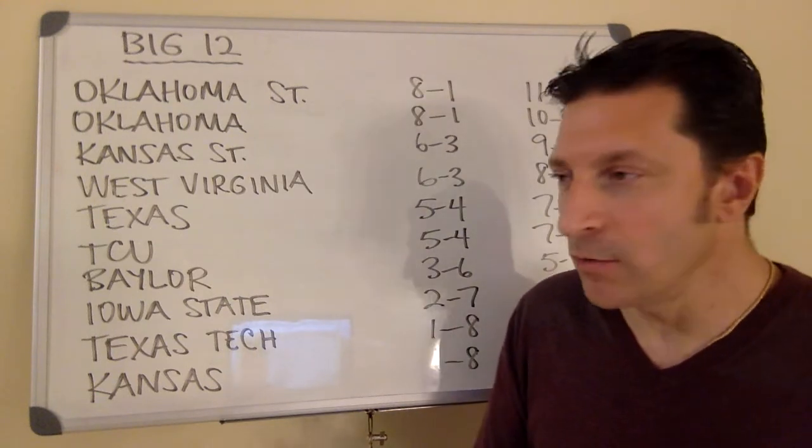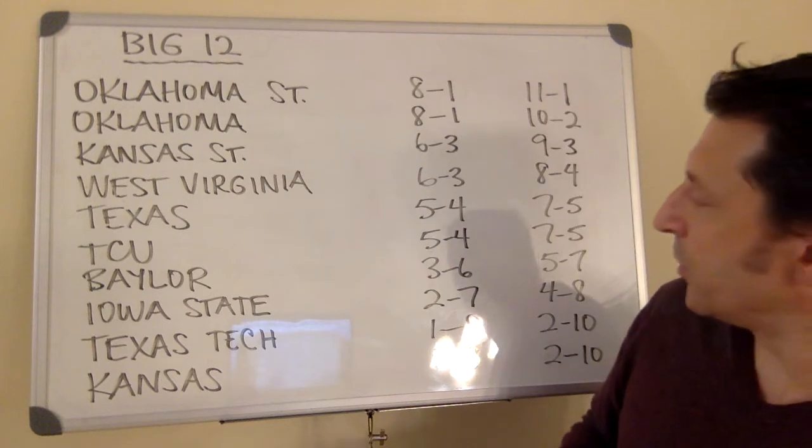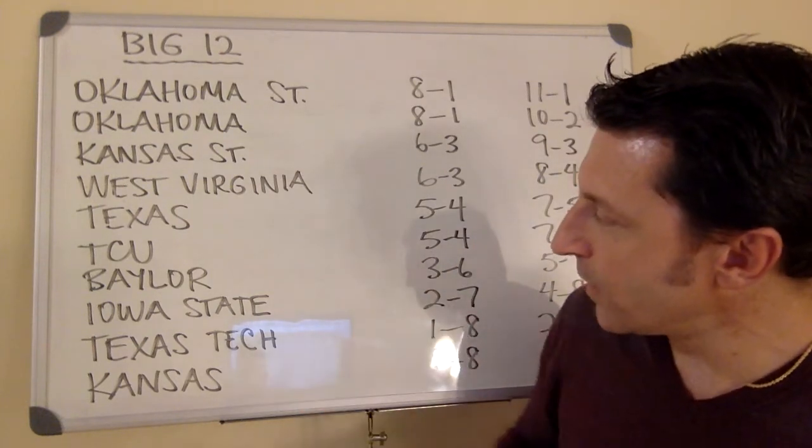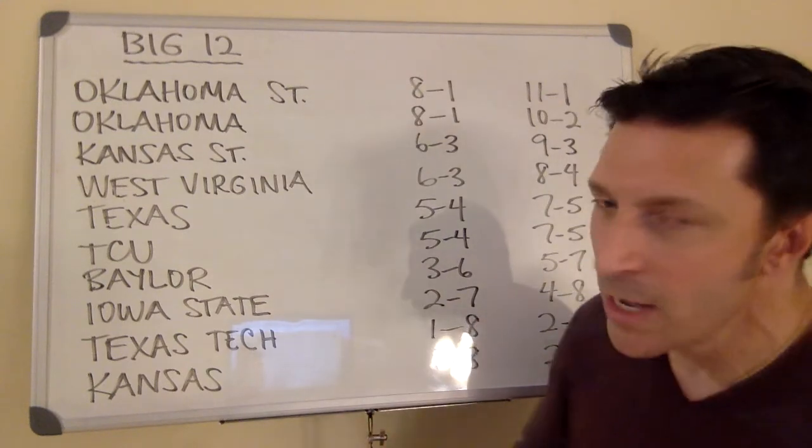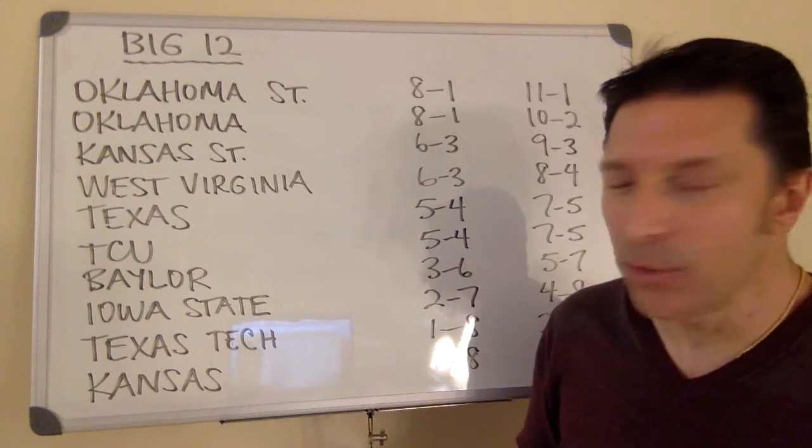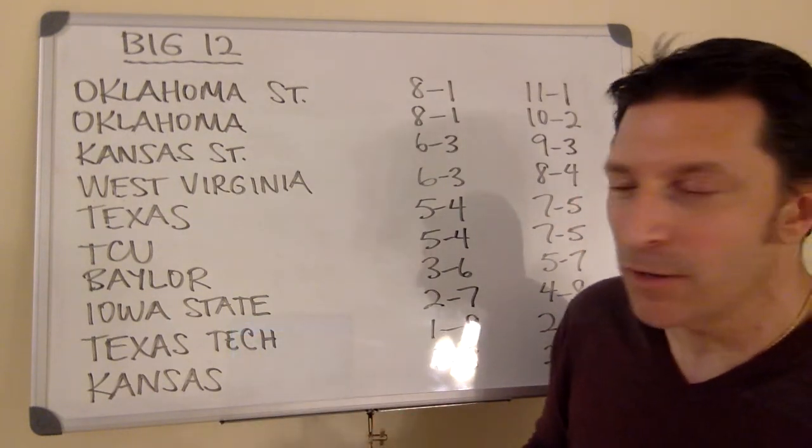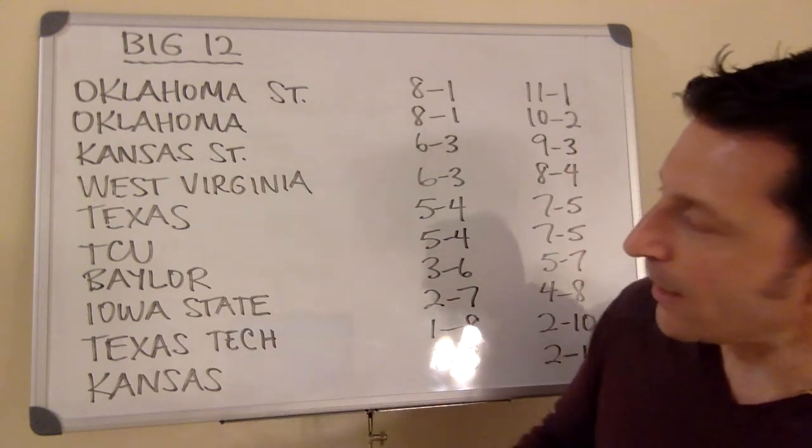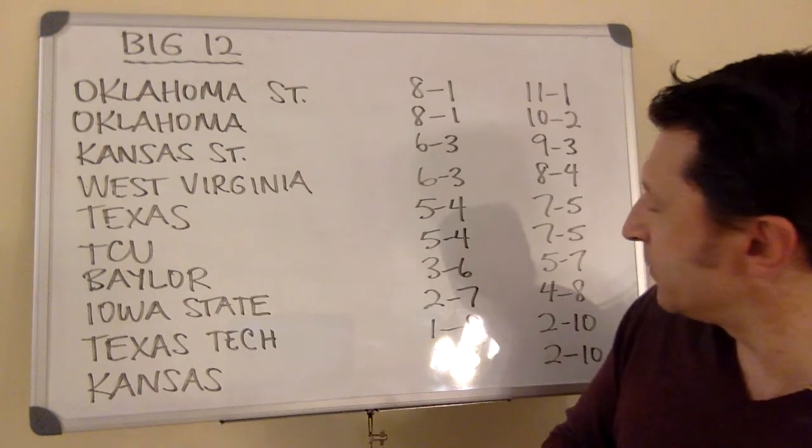TCU with a difficult non-conference game against Arkansas. They lost to the Hawks last year at home. They finished 5-4 in the Big 12. Then you've got the lower tier, the teams that will not make postseason play. I think Matt Rule is a brilliant hire by Baylor. They hit gold there, but this season is going to be difficult for the Bears. They are the class of the underbelly of the Big 12 at 3-6, 5-7.